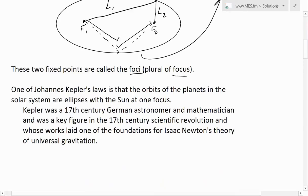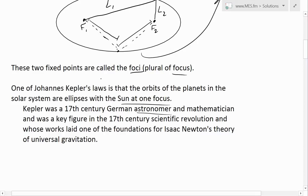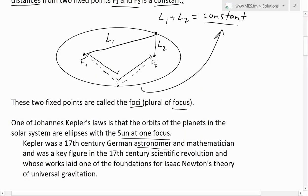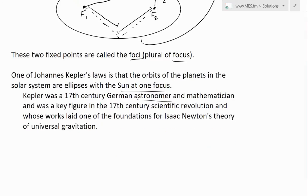Here's a nice historical note: one of Johannes Kepler's laws is that the orbits of the planets in the solar system are ellipses, with the sun as one of the foci. Kepler was a 17th century German astronomer and mathematician, and was a key figure in the 17th century scientific revolution, whose works laid one of the foundations for Isaac Newton's theory of universal gravitation. Note that at this time they didn't have powerful telescopes, so using ellipses is a good model for the orbits of the planets.